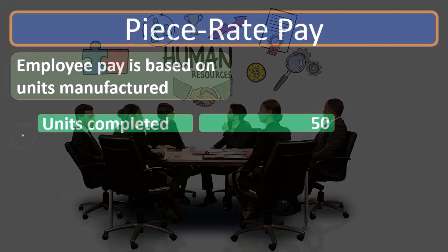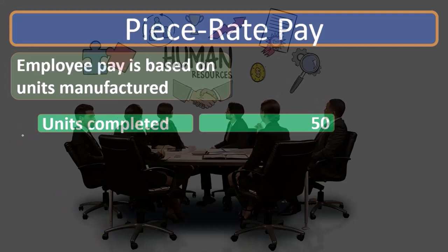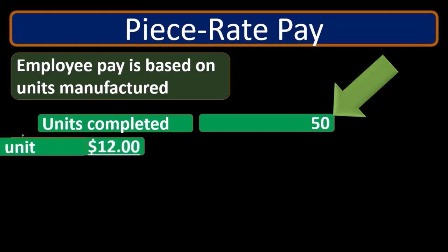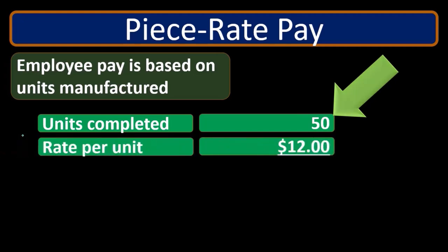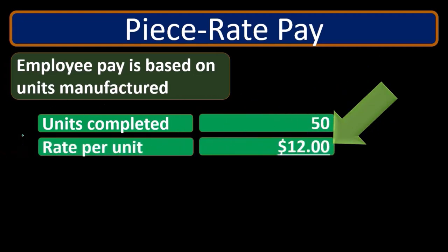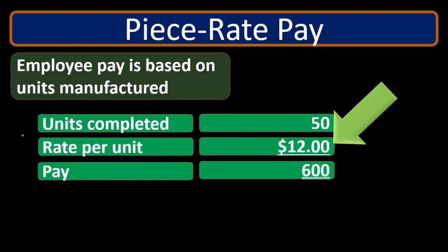For units completed, if we have 50 units completed and the rate per unit is $12, then 50 times 12 gives us $600.